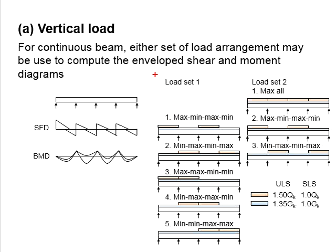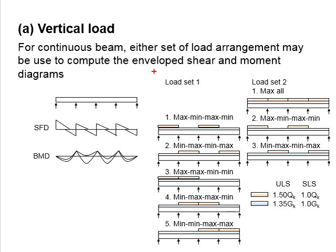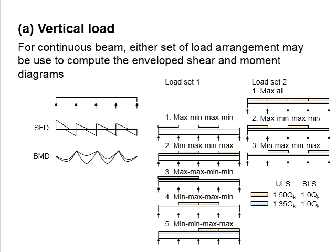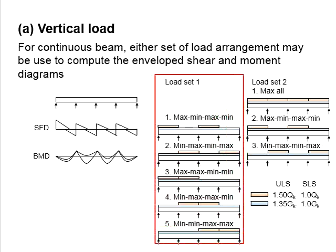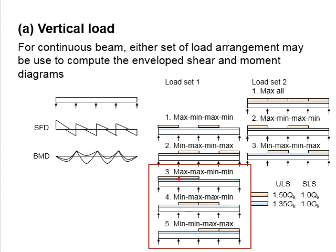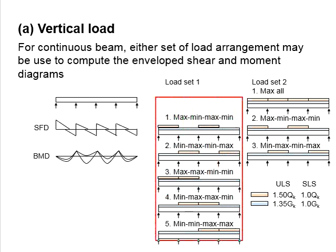You have two load sets — Load Set 1 and Load Set 2 — and you may choose either for analyzing the member. If you choose Load Set 1 for a 4-span continuous beam, you would require at least 5 load arrangements to analyze. The first two involve alternating between maximum and minimum, and the remaining three involve two continuous maximum load spans moving along the members. If you have more spans, you will have more load conditions to be analyzed.